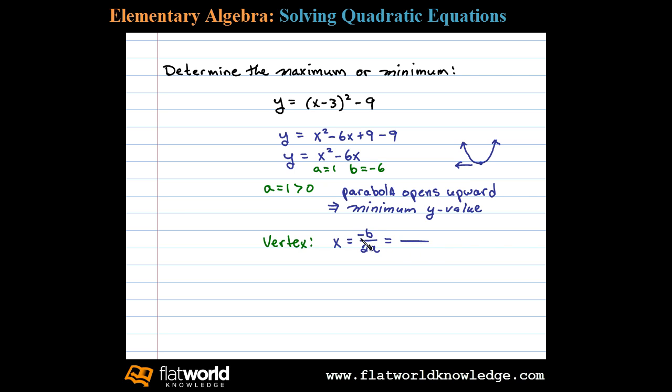We substitute these values in: negative b, or negative negative 6, over 2 times a. That leaves us with positive 6 over 2, or 3.